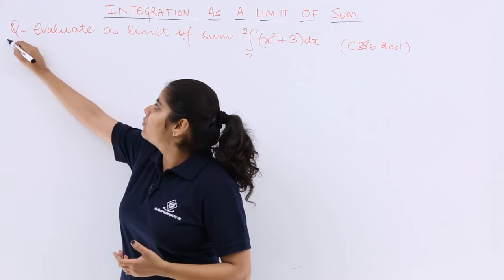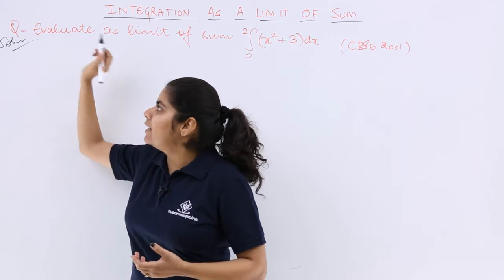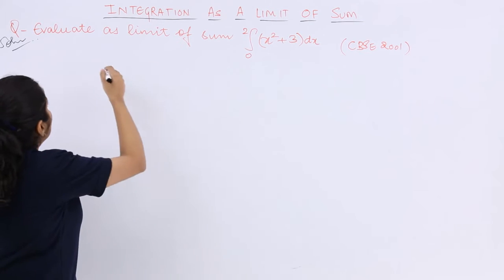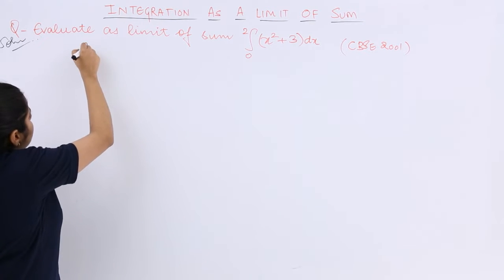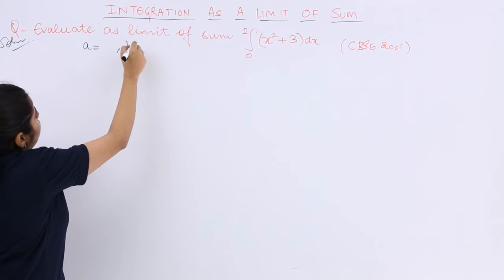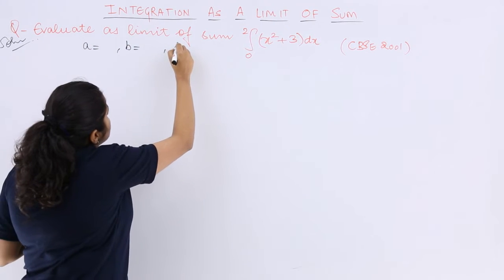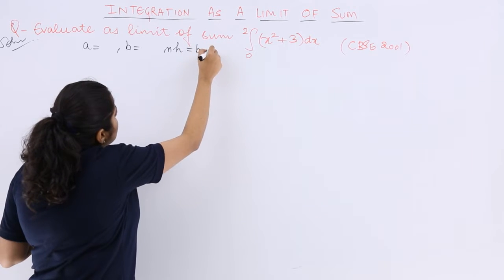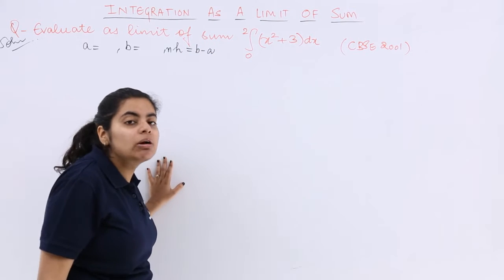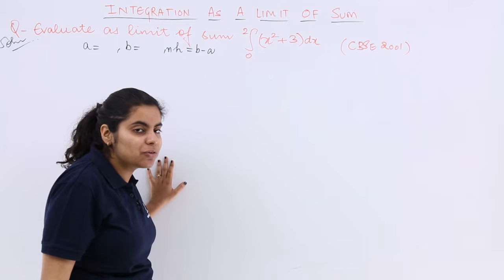Let's start with the solution. I know that certain things have to be defined. What is A? What is B? What is NH? NH is equal to B minus A. We started in the first video based on definite integration as a limit of sum.